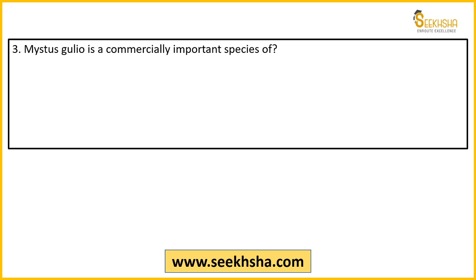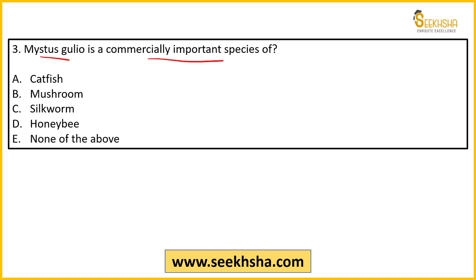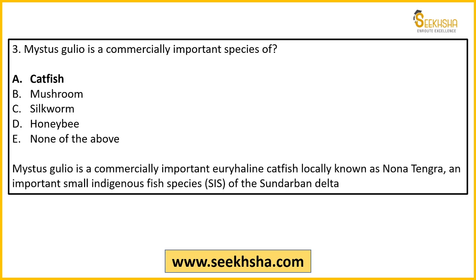Third question: Mystus gulio is a commercially important species of — Option A: catfish, Option B: mushroom, Option C: silkworm, Option D: honey bee, Option E: none of the above. The right answer is Option A — catfish. It is a euryhaline catfish, meaning it can survive in different types of water — salty, fresh, and brackish. Locally it is known as 'nona tengra'. It is a small-sized indigenous fish species found abundantly in the Sundarbans delta.